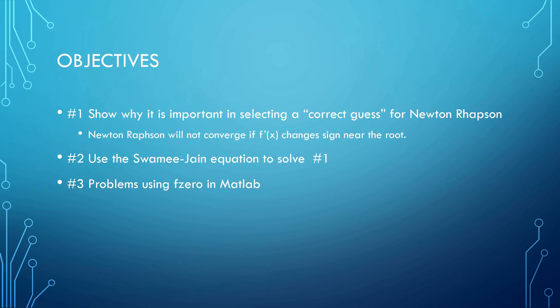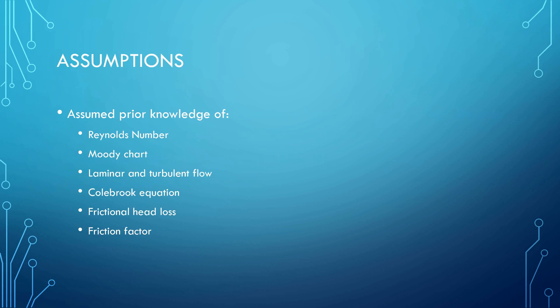The objectives today: we're looking at problems of finding the correct guess for the Colebrook equation — when it converges and when it doesn't converge — and likewise for fzero. A way of getting around it is the Swamee-Jain equation. I assume you already know Moody charts, Reynolds numbers, head loss, Darcy-Weisbach equations, and friction factor — I'm not going over that.